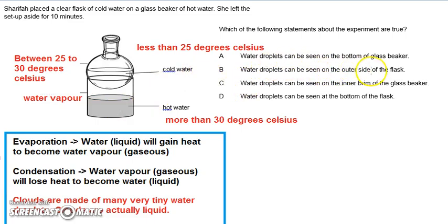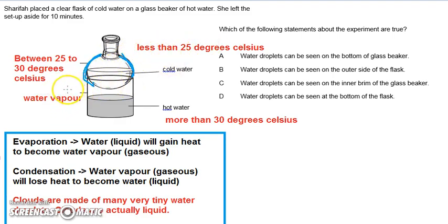Water vapor can be seen on the outer side of the flask. The water vapor in the air is about 25 to 30 degrees. When it touches the cold water inside the flask, which is lesser than 25 degrees, there will be heat loss. When there's heat loss, condensation will happen. So option B is correct.